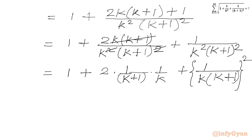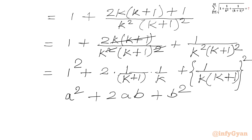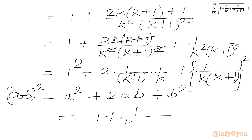And if I consider 1 as 1 squared, then this matches the algebraic formula a squared plus 2ab plus b squared, which is nothing but (a+b) whole squared. So we will write our RHS as 1 plus 1 over k(k+1), whole squared.